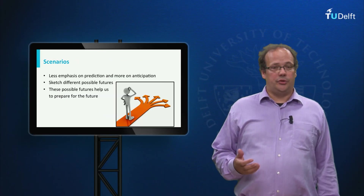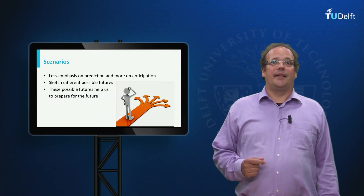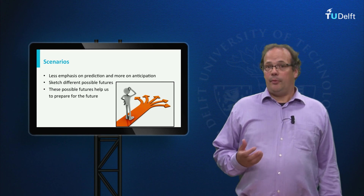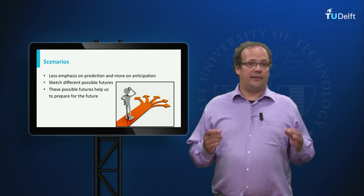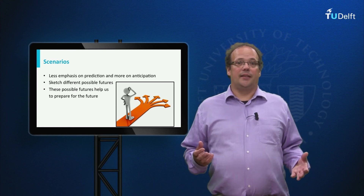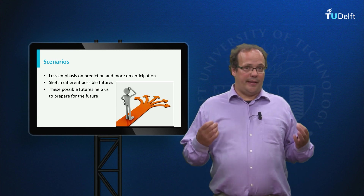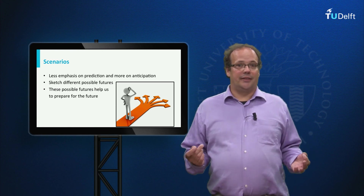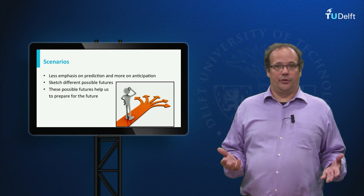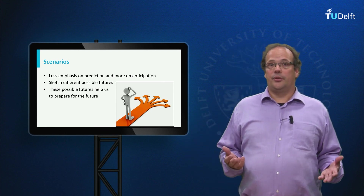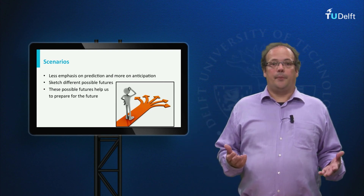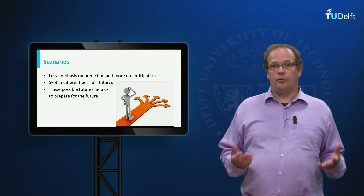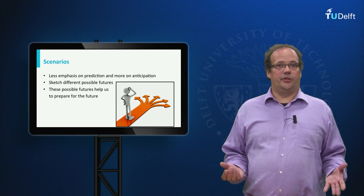One of the tools used in CTA is the building of so-called scenarios. The aim of such scenarios is not to predict the future, but to anticipate possible futures. Such futures help to avoid worst case scenarios and to better prepare for the future by developing strategies that are robust for different possible futures.